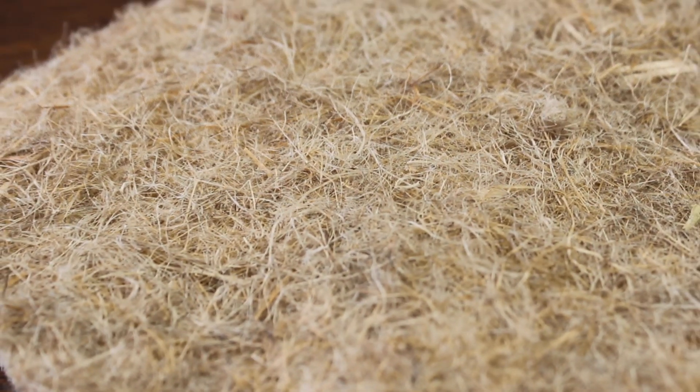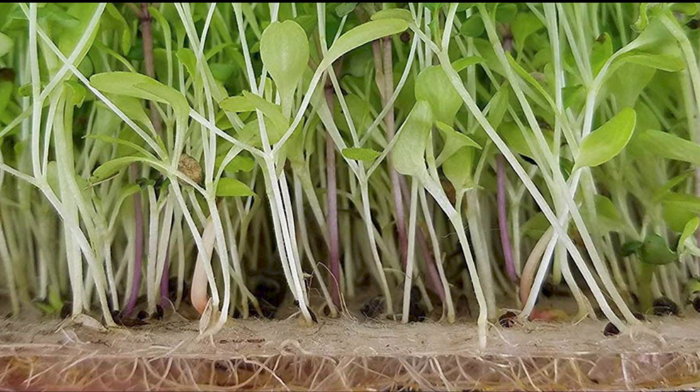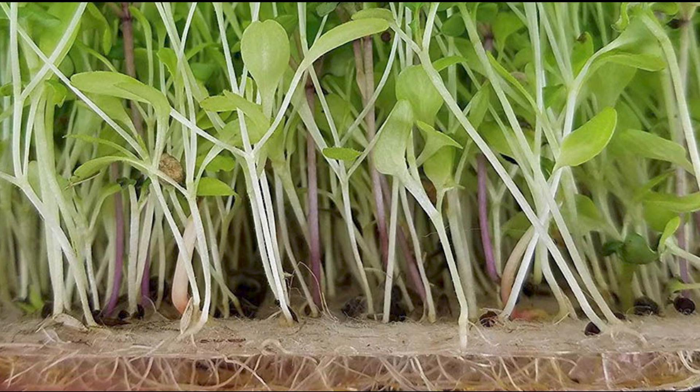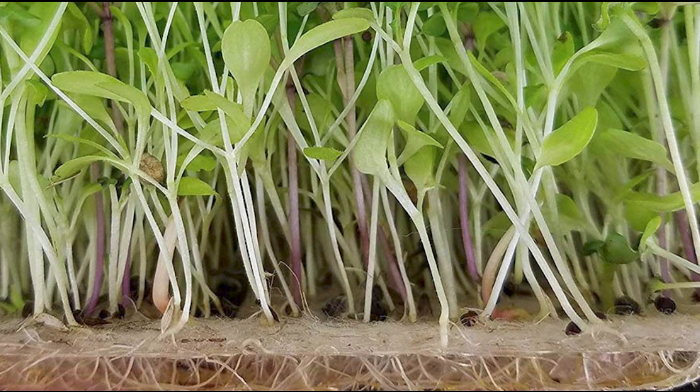Hemp mats are something that people are using for microgreens, but you can also use hemp mats for hydroponic systems, especially for starting your hydroponic plants. That's an alternative as well.